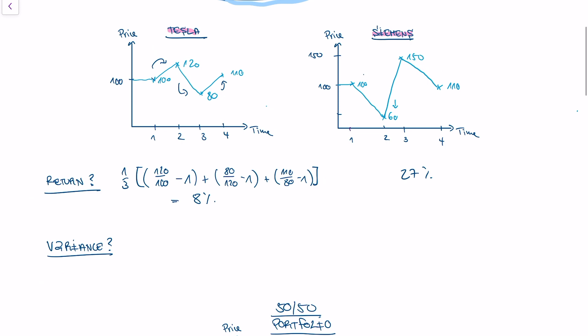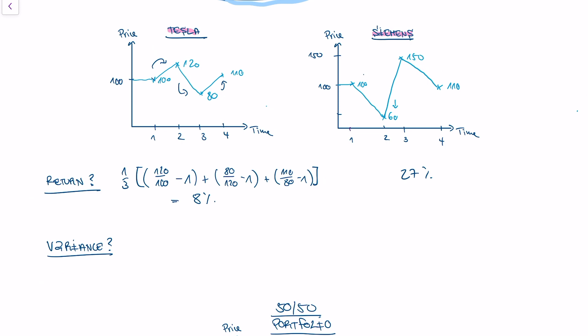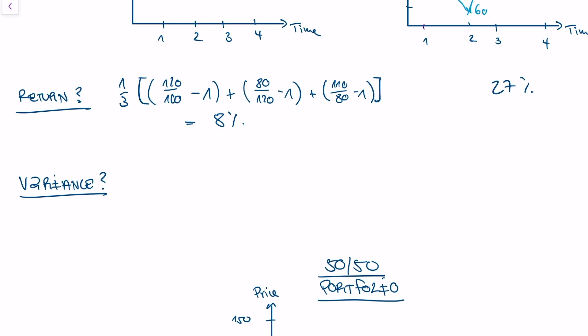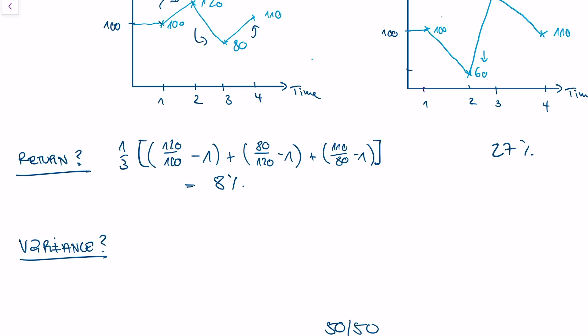The second thing I want to calculate is the variance. So how much jumps the return around for a stock? And for the variance, what I do is I take the standard formula. So I use my return, and the first return is 120 divided by 100 minus 1. And I subtract the average return, which is 8%, and I square this number.